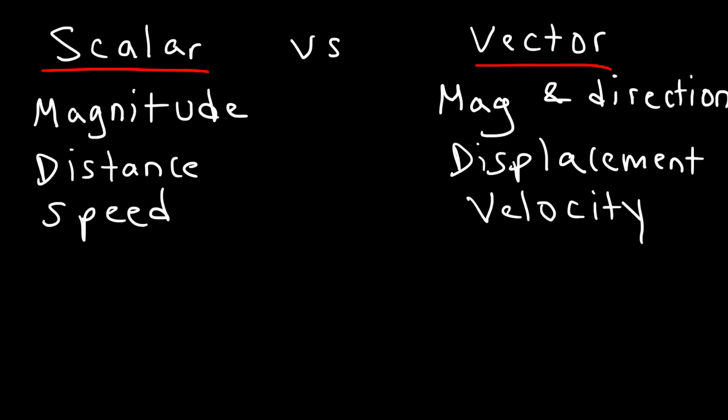So velocity, we describe it as, let's say, 30 miles per hour east. The 30 miles per hour, that is the magnitude. That's how fast it's moving. It's the numerical value. The direction part of the vector is east. So you've got to have those two parts, magnitude and direction, for a quantity to be a vector.